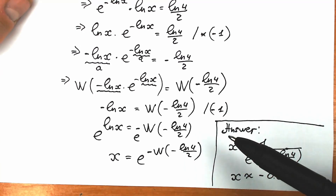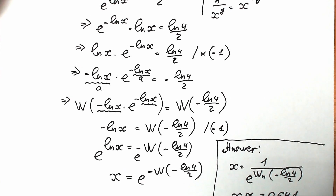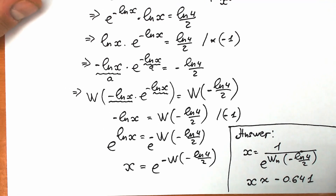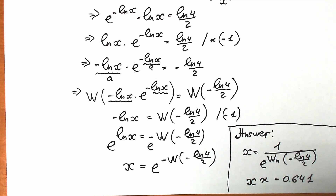So our general answer is like that and our approximate answer is like that. I hope you understand this explanation — this is a tricky question in terms of the Lambert W function. Don't feel bad if you got this wrong. I have a lot of videos on my YouTube channel. Thank you everyone for your support and your response. If you leave a like or a comment, I really appreciate it — it makes me better and I try to improve my videos. Thank you everyone for your time. Wish you all the best. Take care of yourself. See you in the next videos.